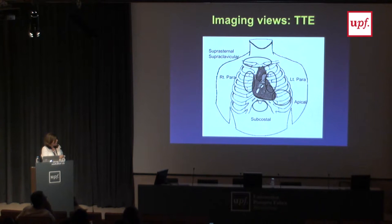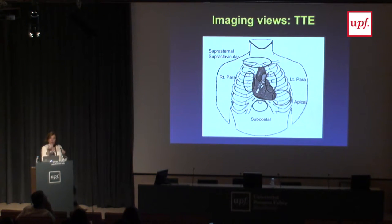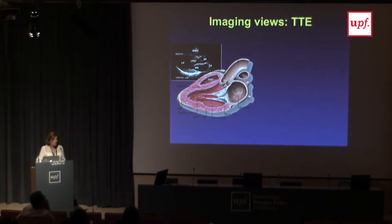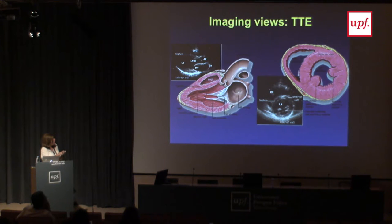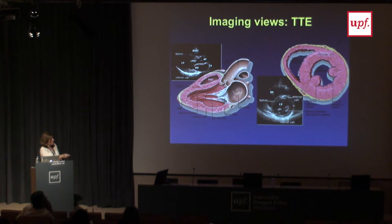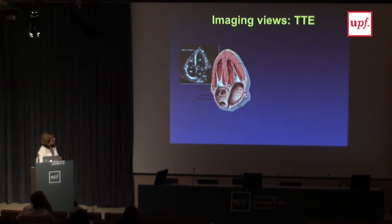We start with a parasternal view and then go to the apical view, changing the cutting planes to see different structures. The parasternal long axis view shows the left ventricle, left atrium, the aorta, and the outflow of the right ventricle. By turning the transducer 90 degrees we have transversal views of the left and right ventricle, and depending on the tilting of the probe we have different cuts at different levels.